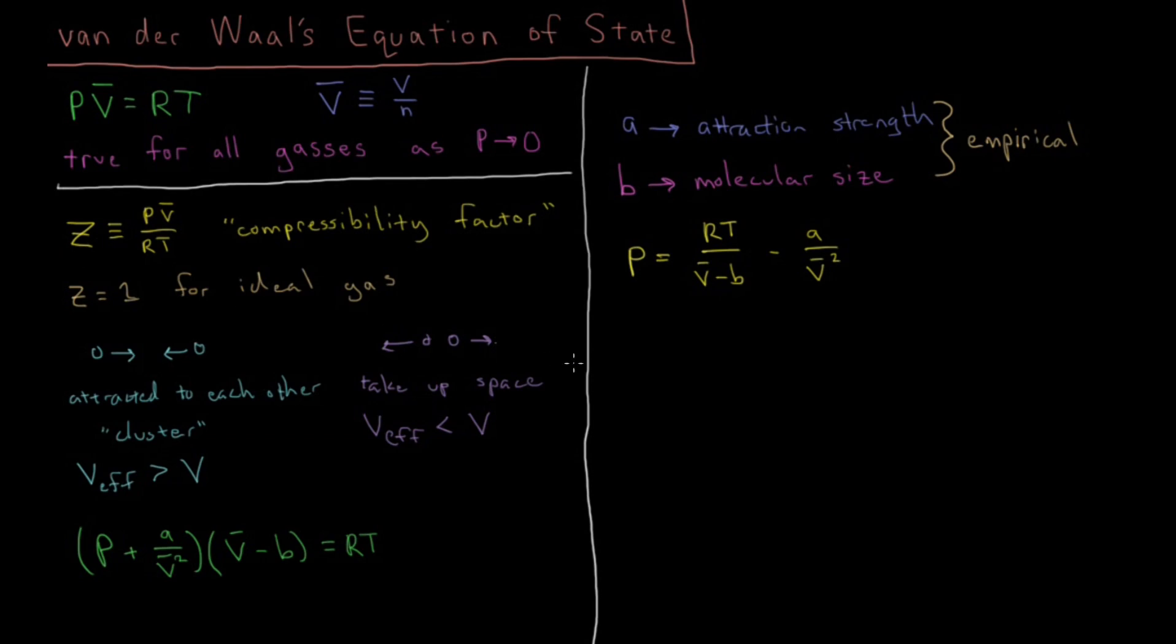So if we plot these things, if we for example we are going to be plotting this compressibility factor Z versus pressure. Now let's say right here with this dotted line we have Z equals 1, which would be our ideal gas behavior. Now we know that at very low pressure all gases will tend to be ideal. So at very low pressure they should all have a Z which is approaching 1.